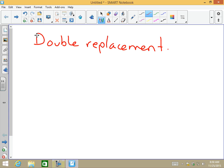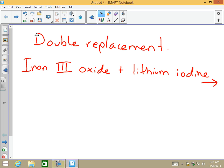For example, if they gave you iron III oxide plus lithium iodine to give you a reaction, what could be a possible reaction? First of all, I need to see what I have. I have iron here with a charge of three, oxygen charge of two, lithium charge of one if I recall correctly, and iodine charge of one.